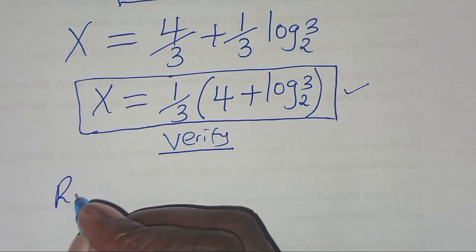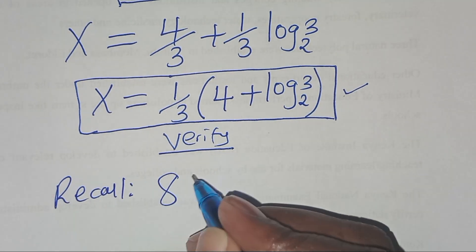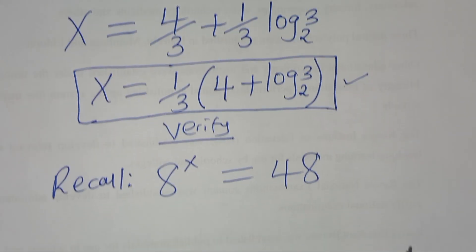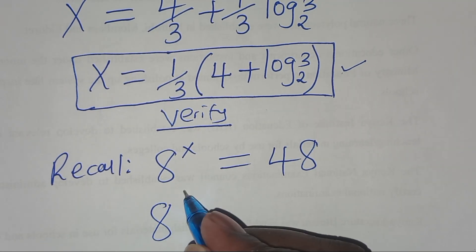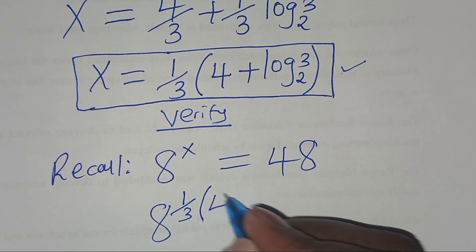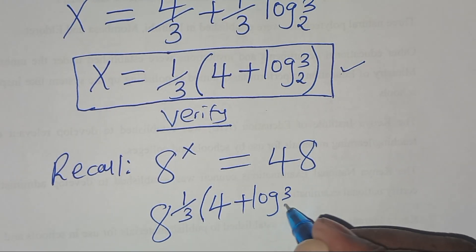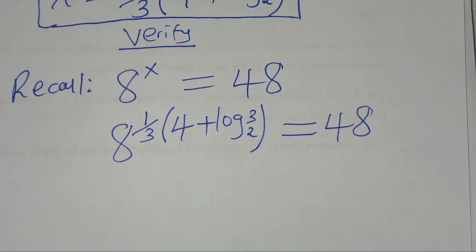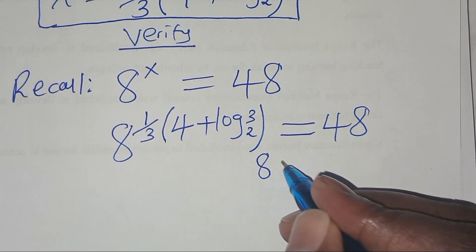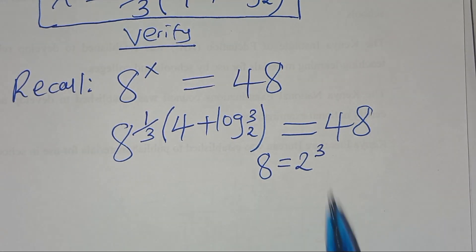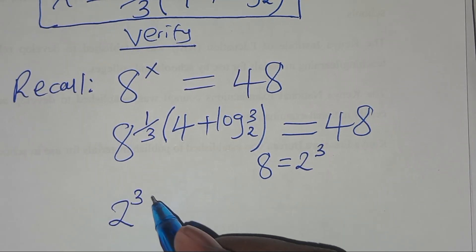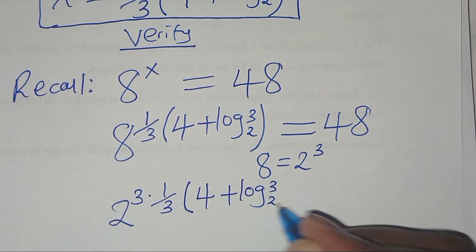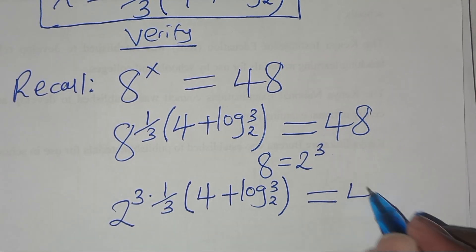If you recall, 8 to power x should give us a value of 48. Substituting the value of x, we have 8 to power (1/3)(4 + log base 2 of 3), which should equal 48. We can express 8 as 2^3, so here we have 2^3 times (1/3)(4 + log base 2 of 3), which should give us 48.